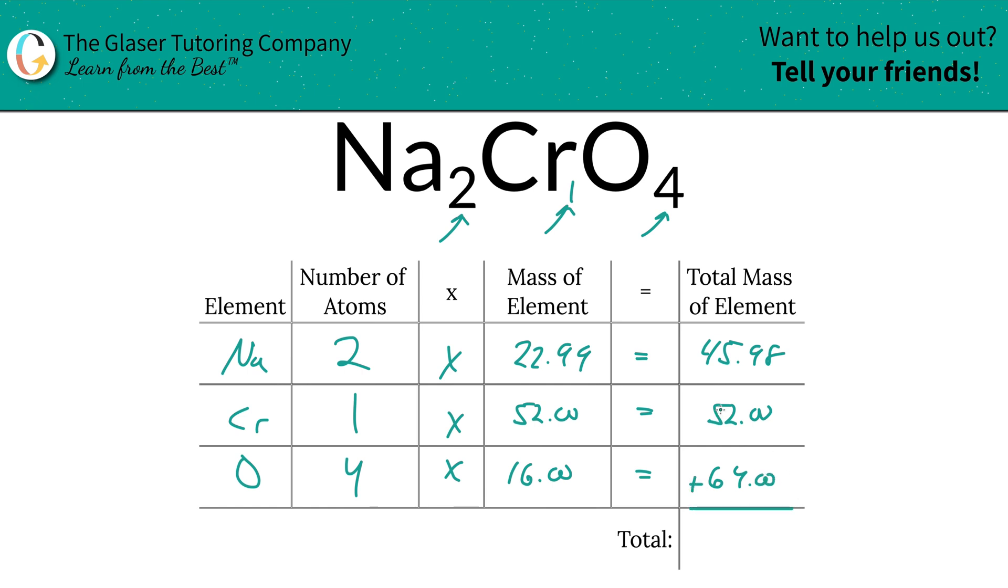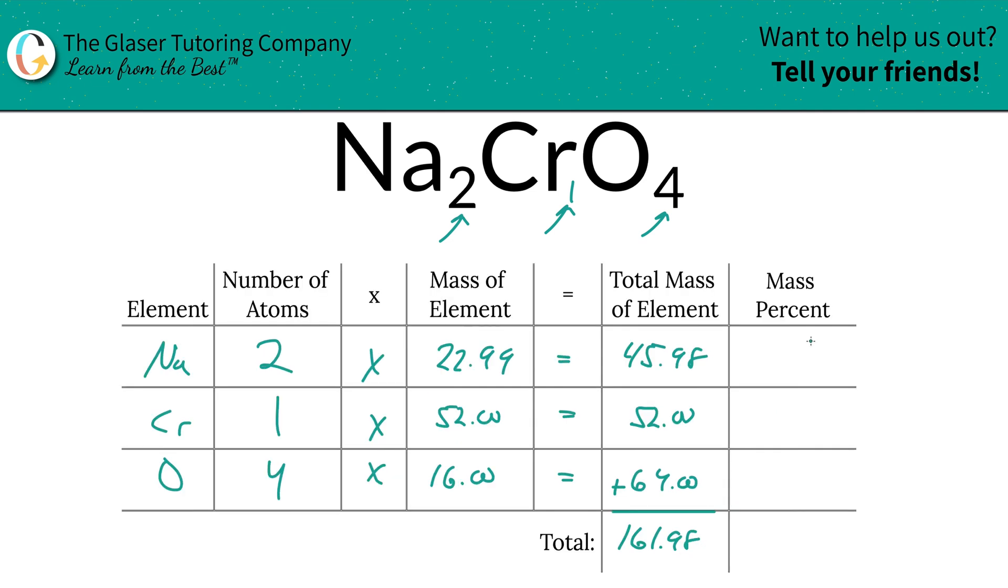And then to find the total mass of the entire compound, literally all you got to do is just add up this column. See how nice and easy that is? So this is 161.98 units of mass. That's the total mass, that's the first step. Now I'm going to add a column to help us calculate those percentages. Watch how easy peasy this is.